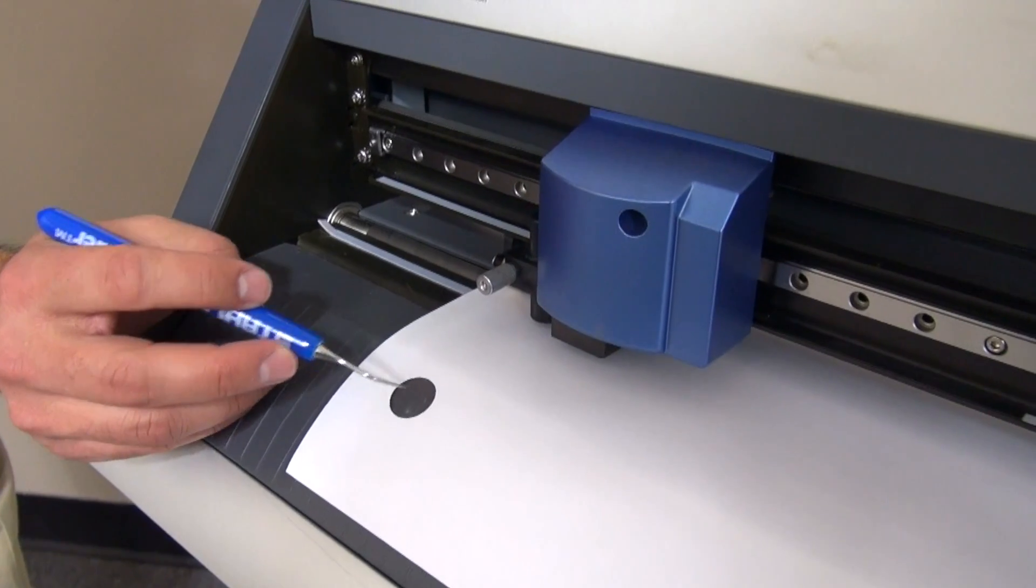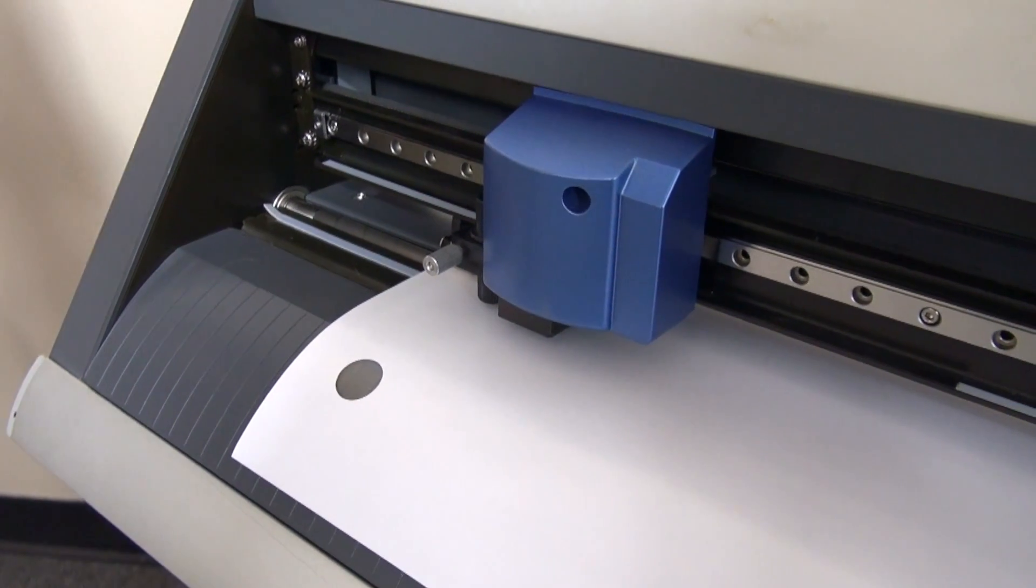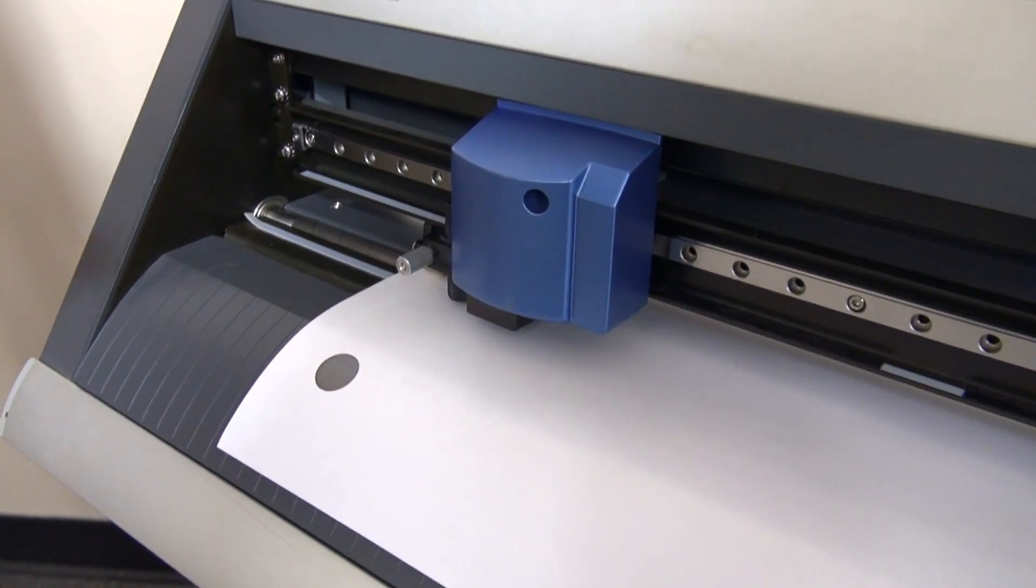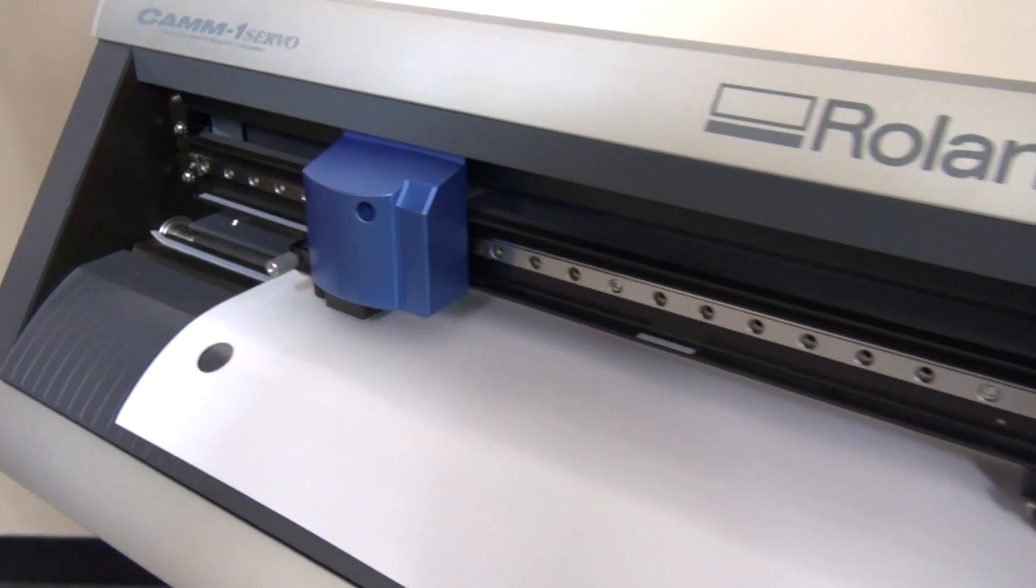Basically, if you see a faint score mark of your cutter blade, that's perfect. So in this case we wouldn't have to make any changes to the force, but should the square have came up or it was too deep, let's take a look at how you would change that.